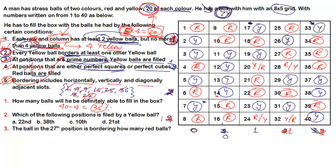Question 2 asks: which of the following positions is filled by a yellow ball? Option 22 is a red ball, option 10 is red, option 21 is red. But slot 38 is a yellow ball. So the answer is option B (slot 38).